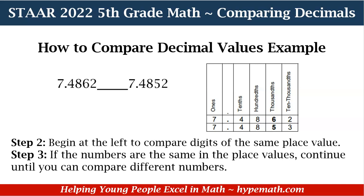Starting at the far left — in our example, that is the ones place. We see that in the ones place, both numbers have sevens. So we go to step 3: if the numbers are the same in the place values, continue until you can compare different numbers. In the ones place our numbers are the same. In the tenths place our numbers are the same — they both have fours. In the hundredths place, again, they're the same — they both have eight.